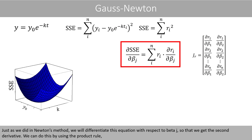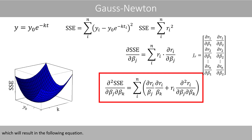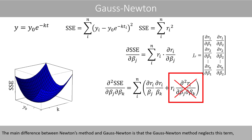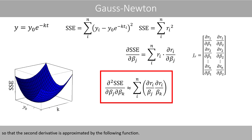Just as in Newton's method, we differentiate the gradient equation with respect to beta-j to get the second derivative, using the product rule. This results in an equation that includes a term with the second derivative, which is complicated to calculate. The main difference between Newton's method and Gauss-Newton is that the Gauss-Newton method neglects this term, so that the second derivative is approximated by a simpler function.